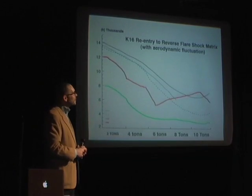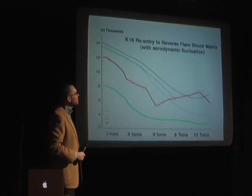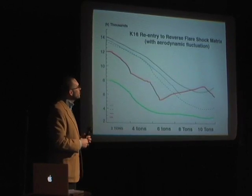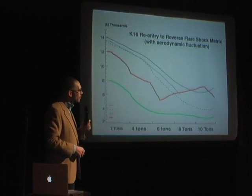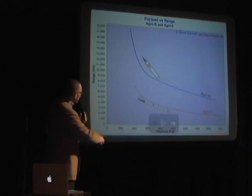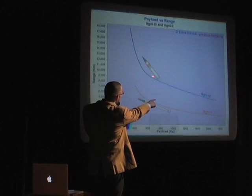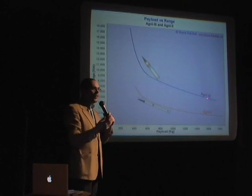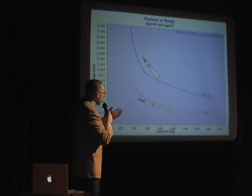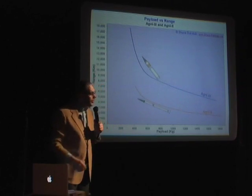You'll notice that the K-16 re-entry to reverse flare shock matrix at 2 tons, 4 tons, 6, 8, and 10 tons — the dynamic of the vectoring is consistent with what we find in K-16. That's correct. And if you'll also notice that with the 12-ton, on the next slide here, when we use the Agni-3 rockets, we found that our range was much higher than anticipated with the original Agni-2 rockets.